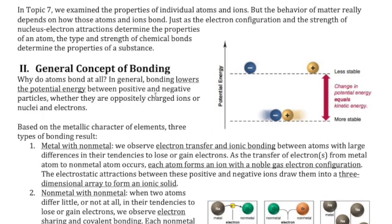Just like in anything in chemistry, the reason a process takes place is because the energy of that system that's formed is lower than the energy of the system before it was formed. When we have separated ions, they are less stable compared to when they form an ionic compound.